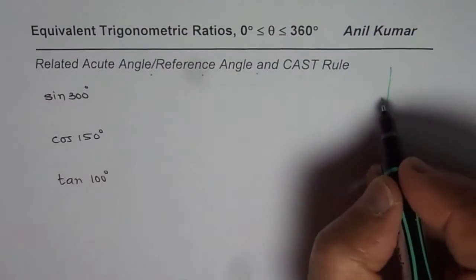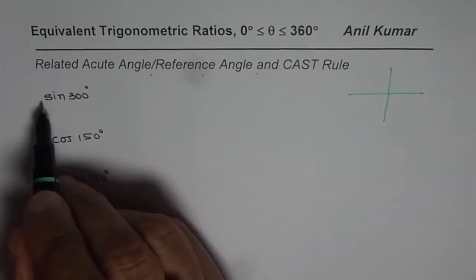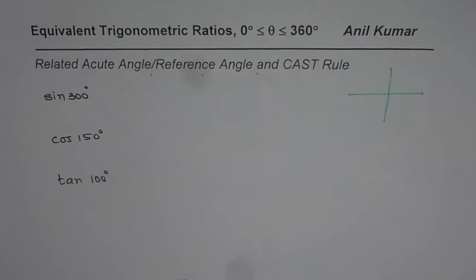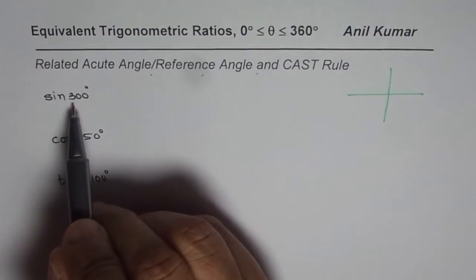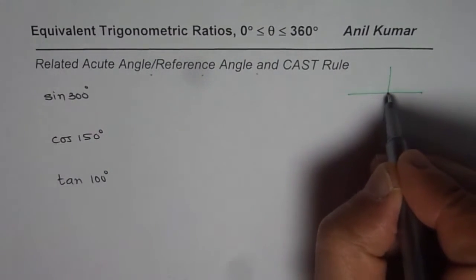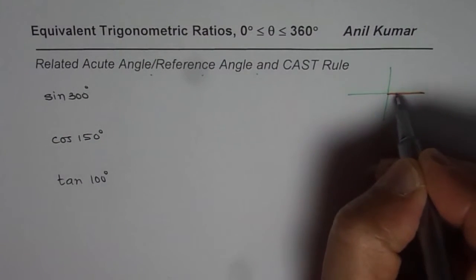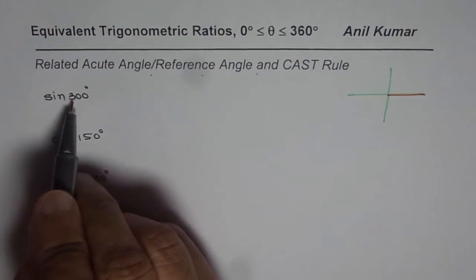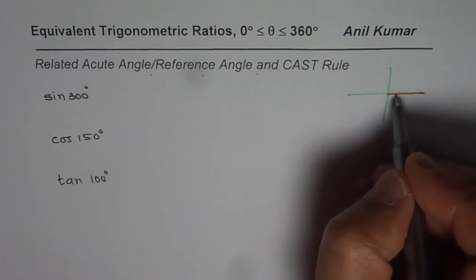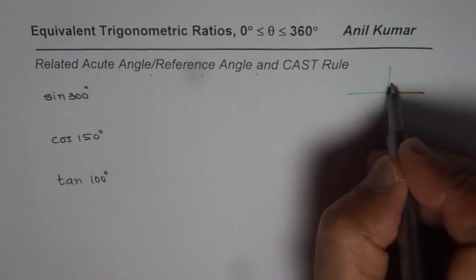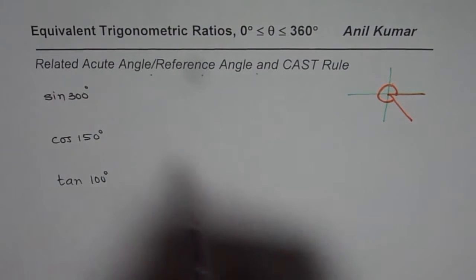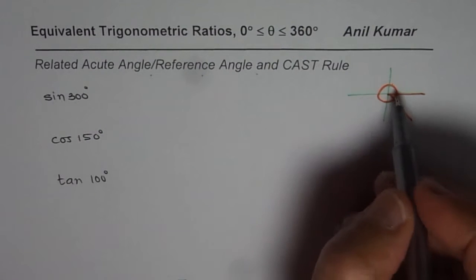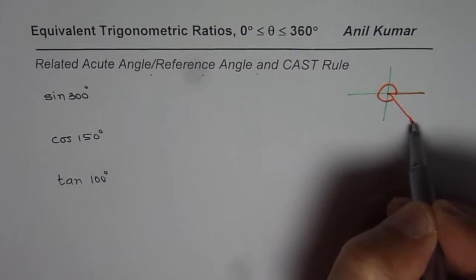Let us begin with sine of 300 degrees. When we say sine of 300 degrees, this angle is always in standard position — that means the initial arm is along the positive x-axis and the terminal arm is 300 degrees counter-clockwise. That is always assumed.